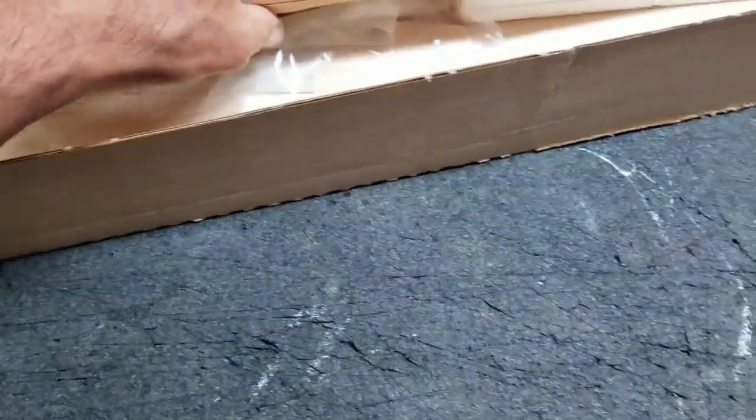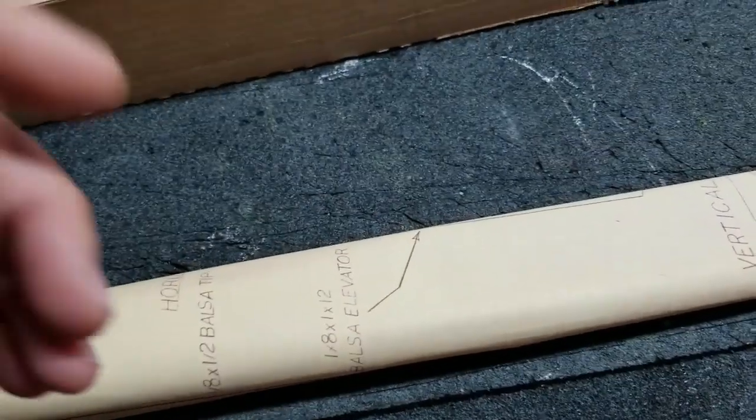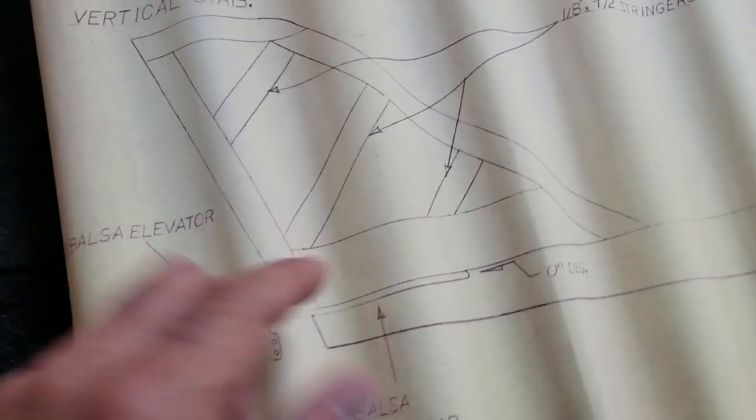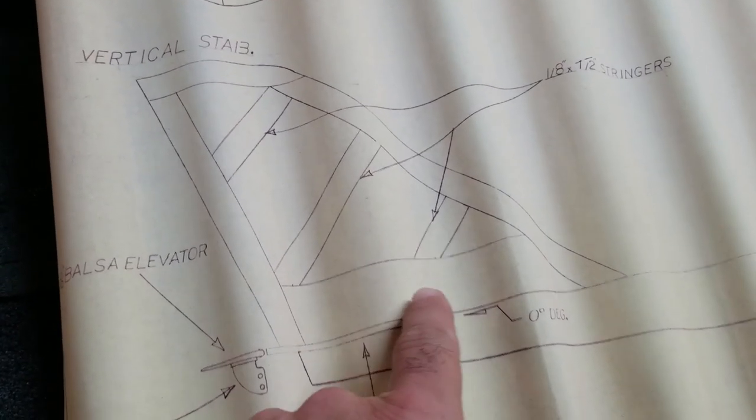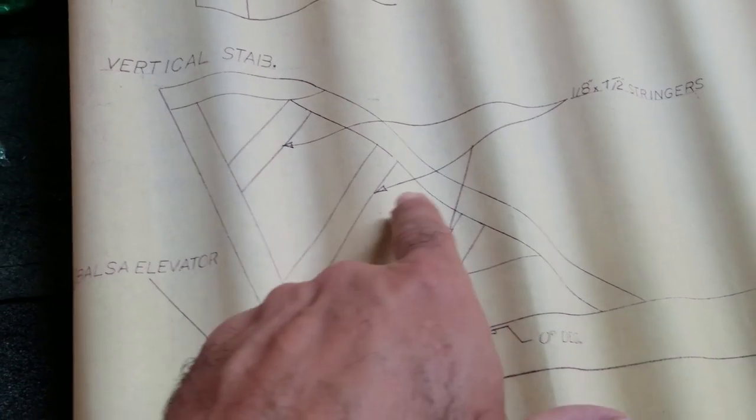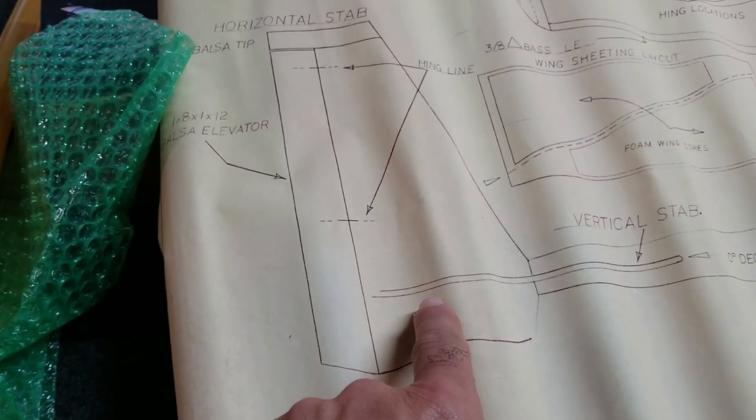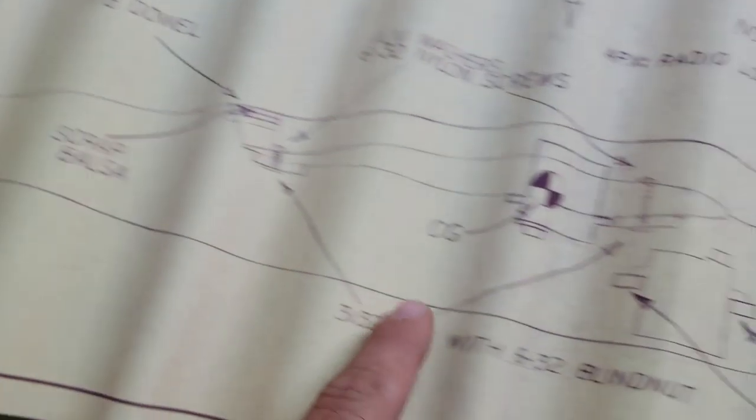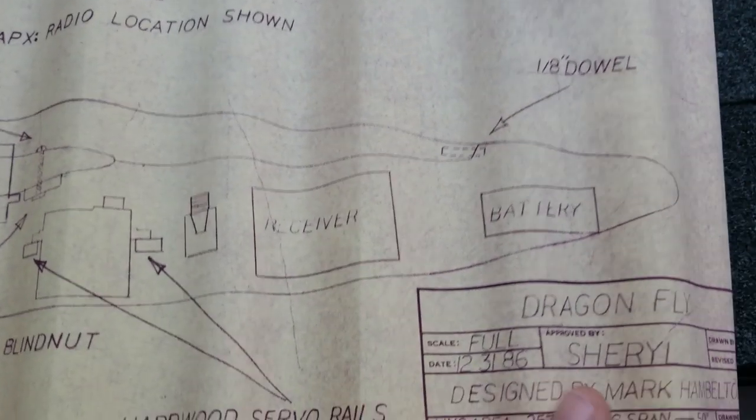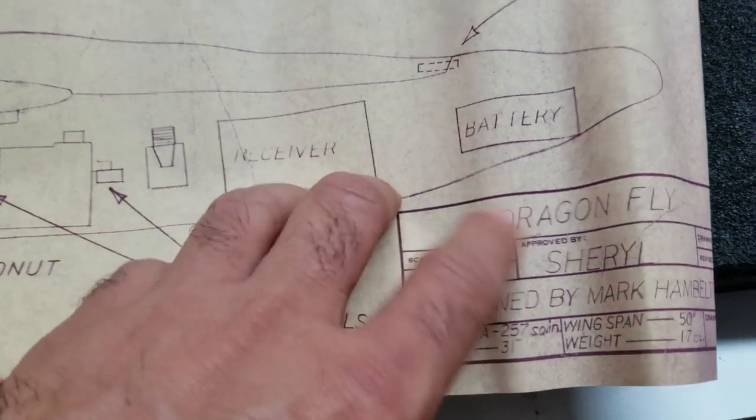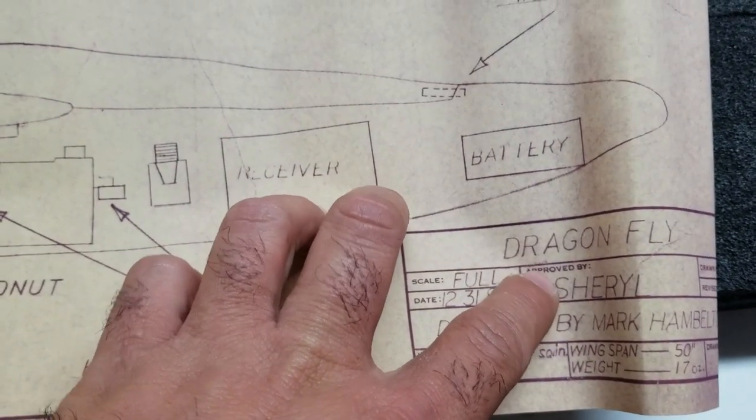Put that aside. We have some plans here. Let me unroll these. So we have a balsa wood vertical stabilizer, which is not a solid plank. It's actually built up with a few different pieces. And then we have the elevator here, which is just a solid plank. And then we have the fuselage layout right here, showing servos, receiver, battery. And this was approved by Cheryl, so thank you Cheryl.